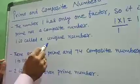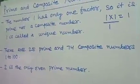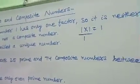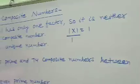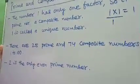One is called a unique number, because it is neither a prime nor a composite number.